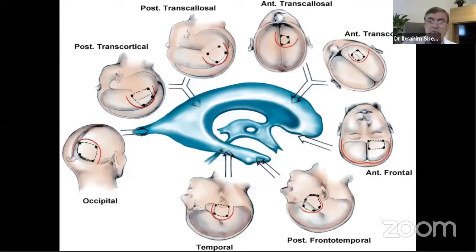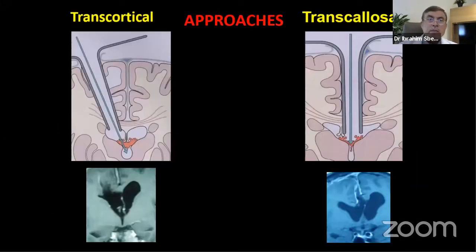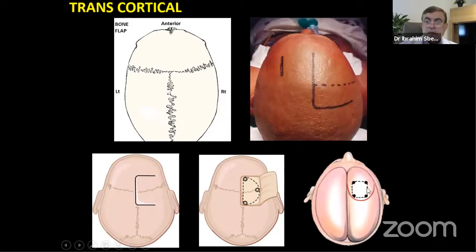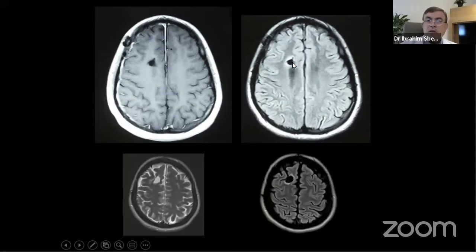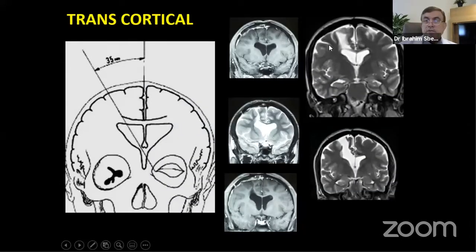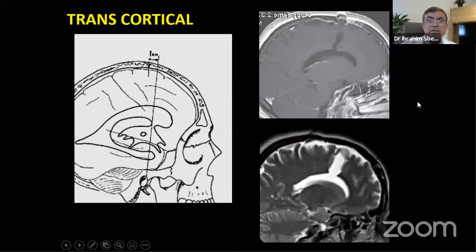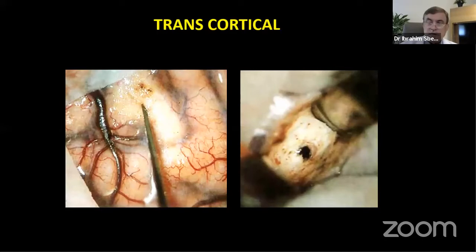Approaches to the ventricular system depend on tumor location, but since SEGA is usually around the foramen of Monro, the main approaches are transcortical or transcallosal. The transcortical approach goes through the sulcus between the superior and middle frontal gyrus, or through the middle frontal gyrus, with an inclined trajectory into the ventricular cavity.